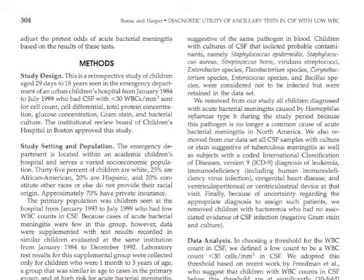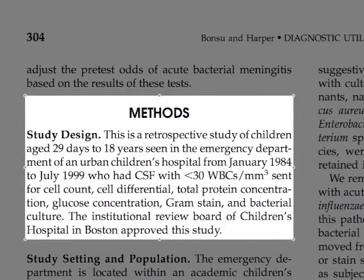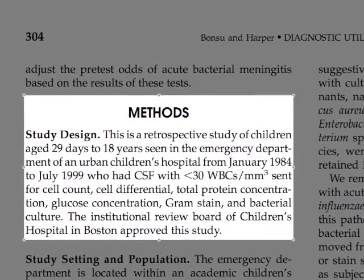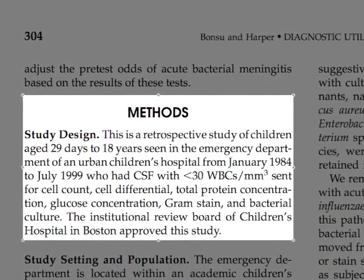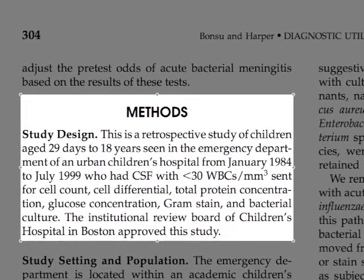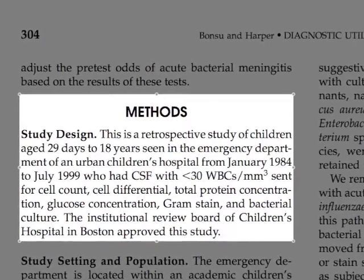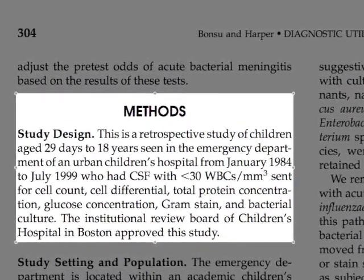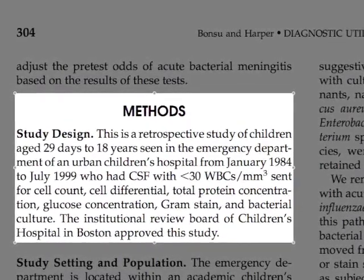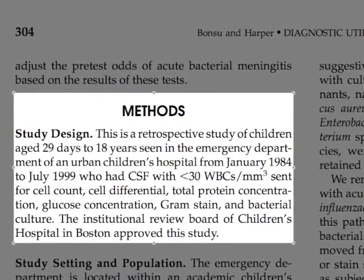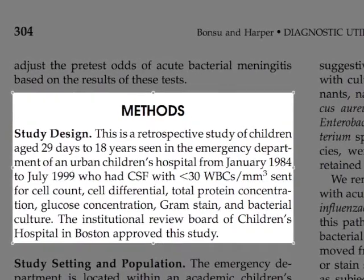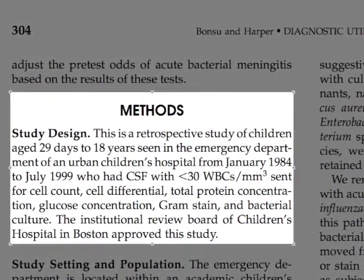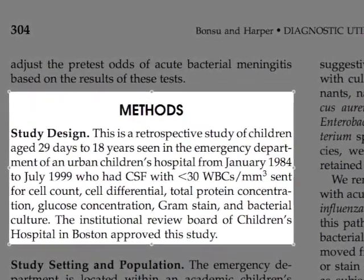The next stop is the methods section. This is often filled with information that you will find hard to understand, so you need to ignore a lot and look for what you're after. Although we ask the question 'were the cases and controls equally sick?' second in our CAT, in the Banzu paper that information is given at the beginning of the methods section.